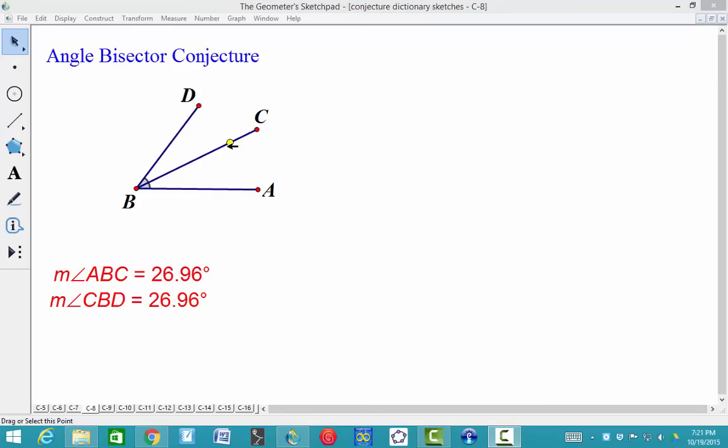This is conjecture number 8, the angle bisector conjecture. What it states is that if you have a point that lies on the angle bisector, it is equidistant from the sides of the angle.